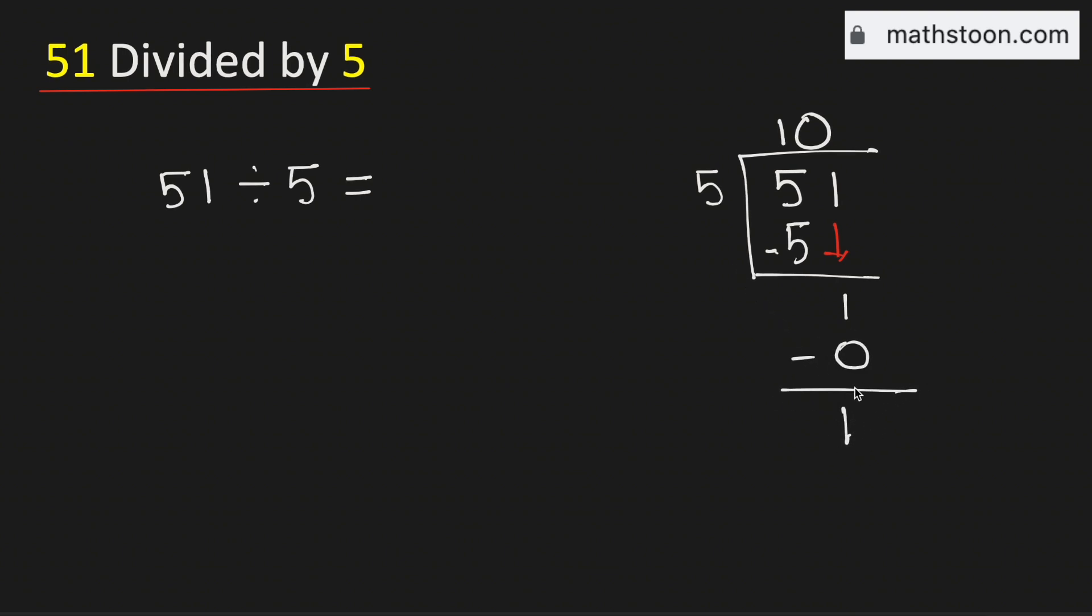But in this case we need to put a decimal here so that we can write one 0. Now 5 times 2 is 10. Now subtract, we get 0.